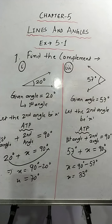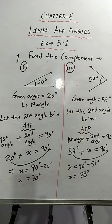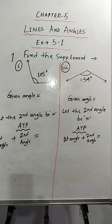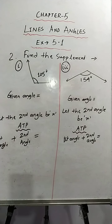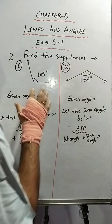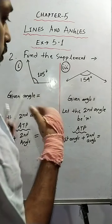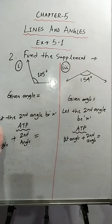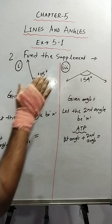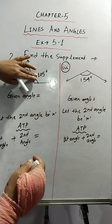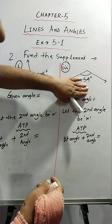Now let's move on to question number 2. In question number 2 they have asked to find the supplement. You know that in the case of supplementary angles the sum of two angles is 180 degrees. I'm going to explain sum number 1 and 3; sum number 2 you will practice on your own. Sum number 1 has a given angle of 105 degrees, and the third question has a given angle of 154 degrees.